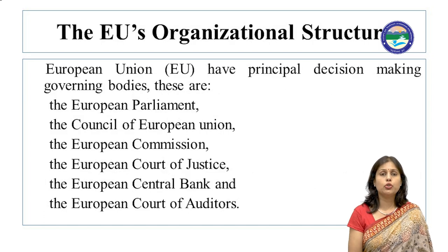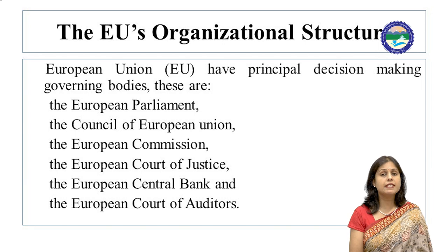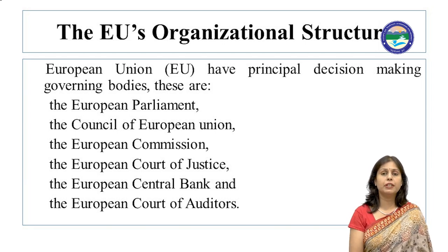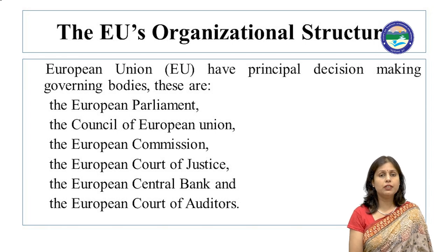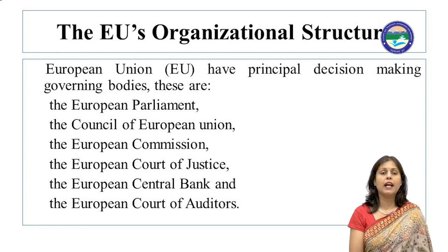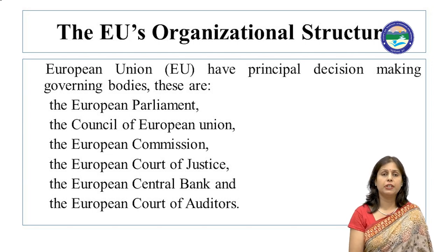Next is the European Union's organizational structure. The European Union has several principal decision-making governing bodies: the European Parliament, the Council of the European Union, the European Commission, the European Court of Justice, the European Central Bank, and the European Court of Auditors. These are the common governing bodies of the European Union.